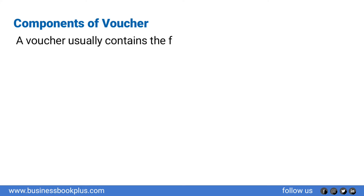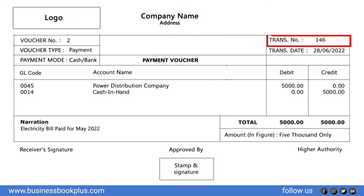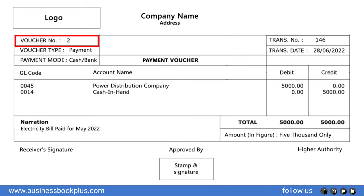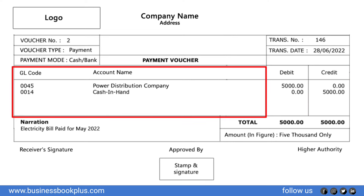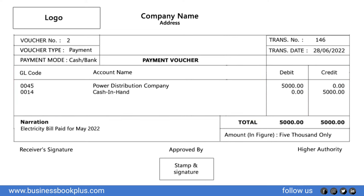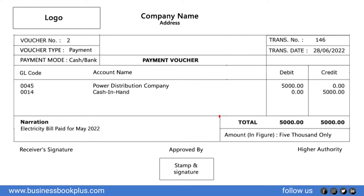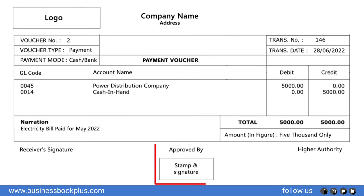Components of a voucher. A voucher usually contains the following information: transaction number, transaction date, voucher number, voucher type, debit account and credit account, ledger columns with GL code or name of customer, suppliers, or party, debit and credit amounts, narrations or particulars column which includes a brief description of the transaction, total amount of the voucher, total amount payable in words and figures, payment mode, and approval stamp and signature of the accountant and higher authority.